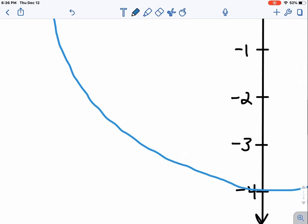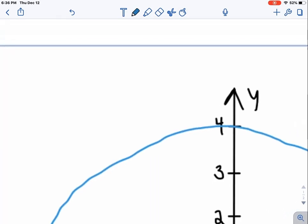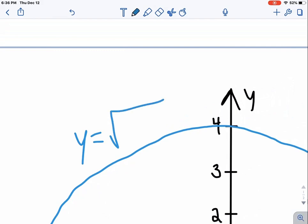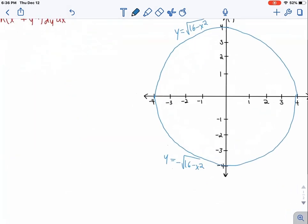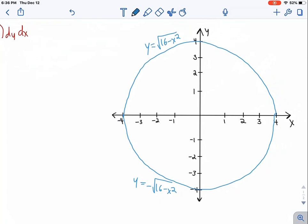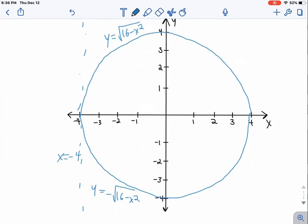So I'll label this y equals negative square root of 16 minus x squared, and up here, y equals positive square root of 16 minus x squared. The x bounds are from negative 4 to 4. I'll draw a dotted line here at x equals negative 4, and over here at x equals 4.